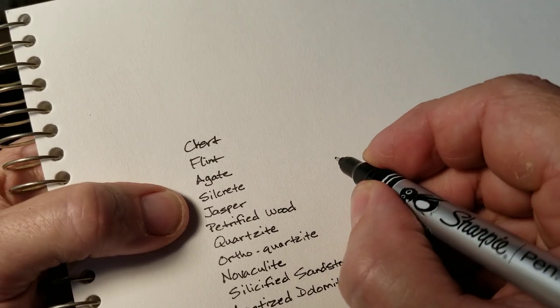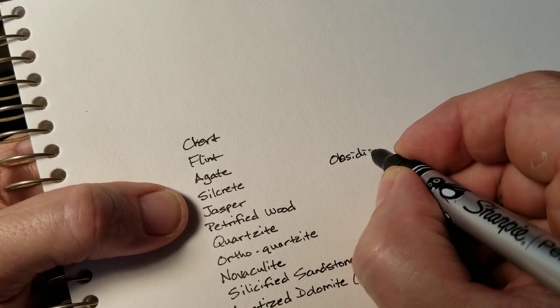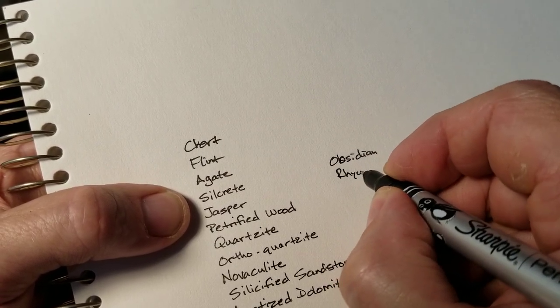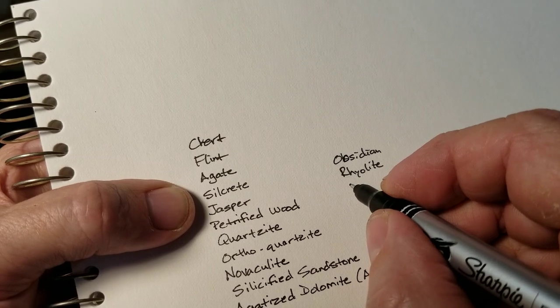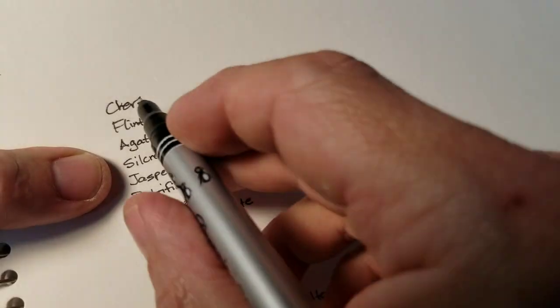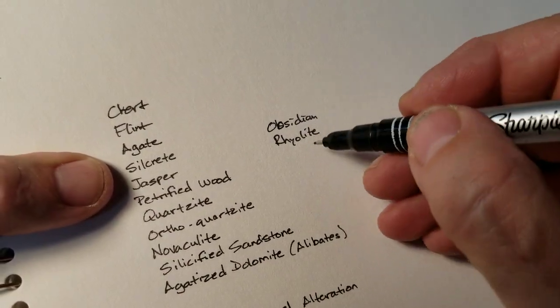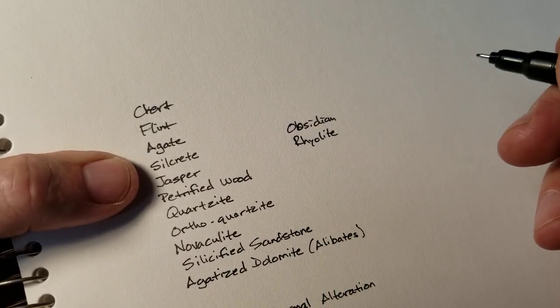Stuff that cannot be heat treated is obsidian, rhyolite, and other stones that are not on this list. But I get questions on these two. Can I heat treat these two? And the answer is no. They do not respond to heat treating.